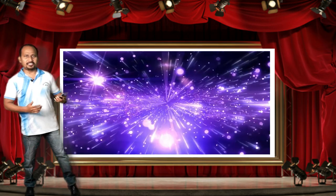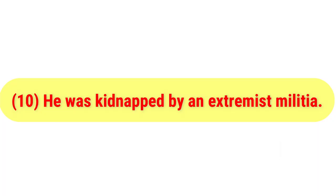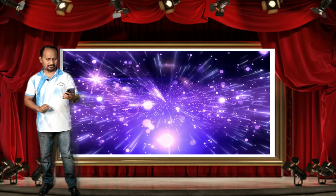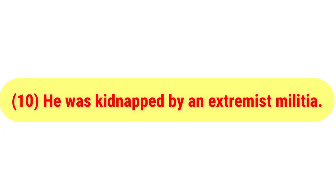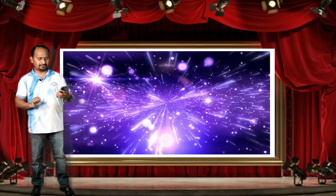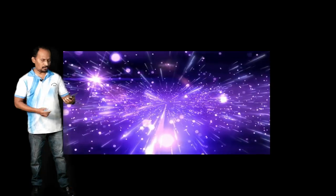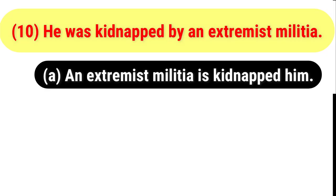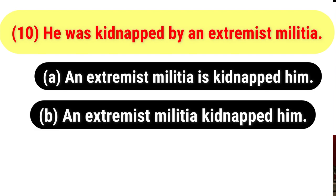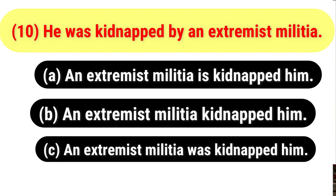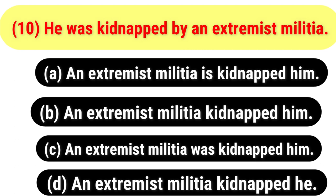The last question: 'He was kidnapped by an extremist militia.' You have to change this passive voice sentence to active voice. The options are: A) An extremist militia is kidnapped him; B) An extremist militia kidnapped him; C) An extremist militia was kidnapped him; D) An extremist militia kidnapped he. Your time begins now.